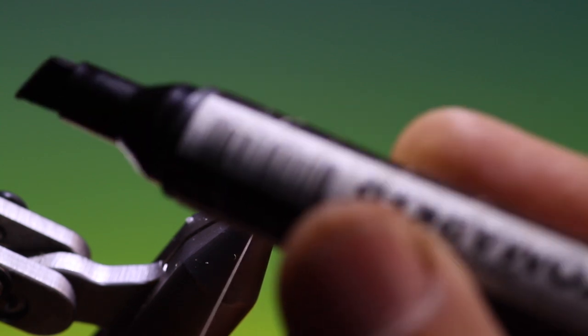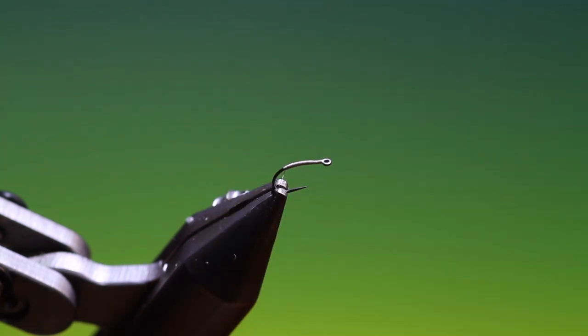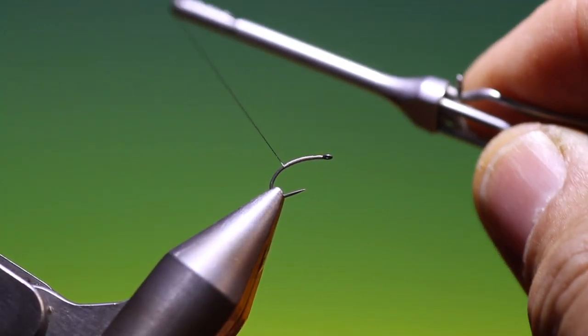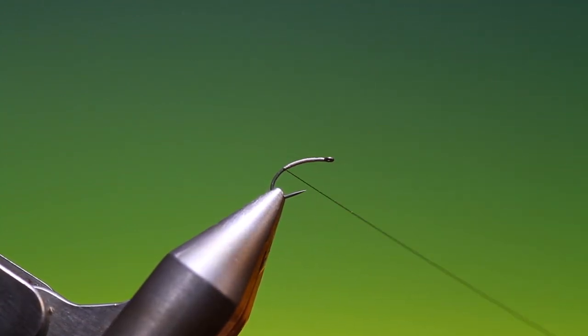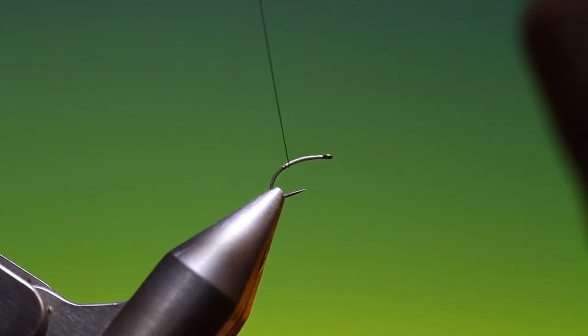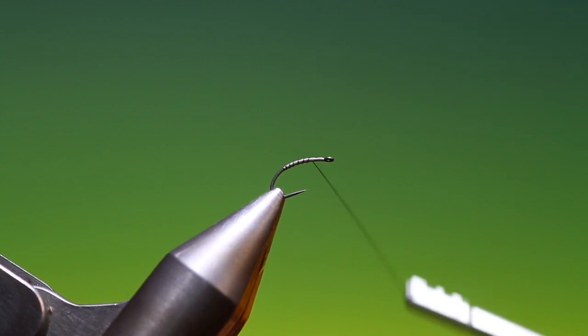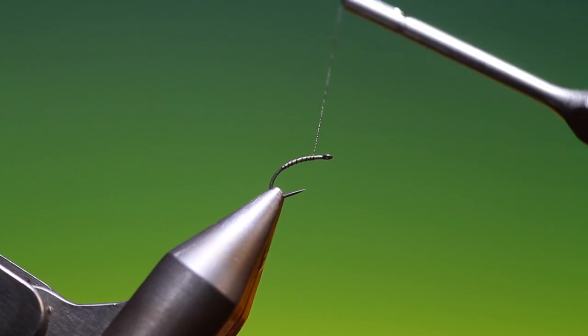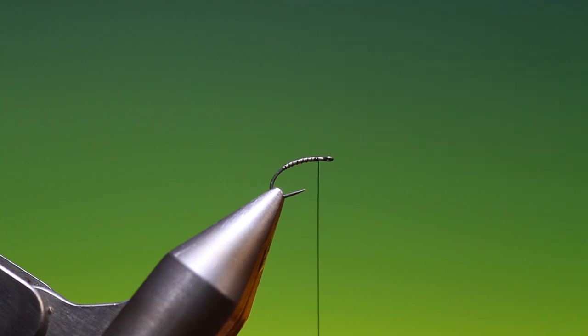So I've got a waterproof felt marker, black, and I'll just color about seven, eight centimeters of tying thread. Then we'll just wind in that very last part of the tan. Then we come up with the black thread and make a rib. And when we get to there, we can make four or five turns with the black like so.